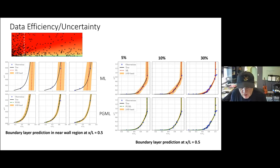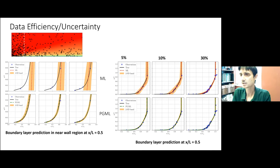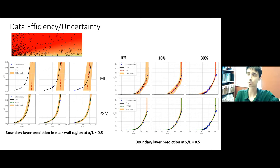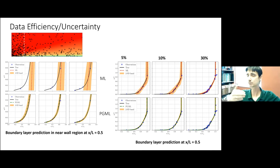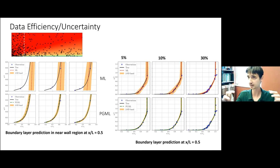A question was asked: are these in the context of RANS? The answer: yes, in this case all the data is generated using RANS — it is a steady-state RANS solution. It is an open forward simulation used to generate the training data. This was a static test to understand whether the inductive bias is helping or not — there is no time involved in this example.